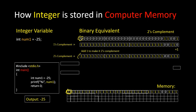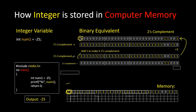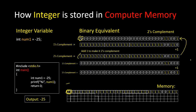Whenever the program sees the leftmost bit is 1 — that is, the sign bit is 1 — it detects that this is a negative integer. To find the actual value, we calculate the two's complement of whatever is stored in memory. First we calculate the one's complement of the stored two's complement, which gives us back the original binary for 25. The computer then calculates that this equals 25, and prints minus 25.